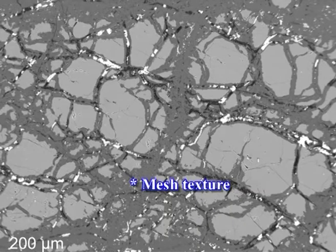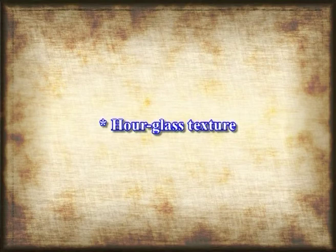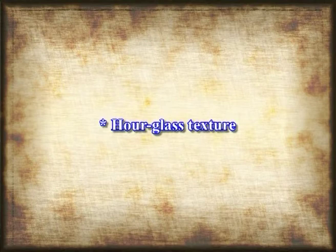Replacement textures, also called superimposed textures: mesh texture develops in serpentinites where needle-shaped serpentine minerals occur in aggregates interwoven like a mesh. Hourglass texture, also in serpentinites, where serpentine minerals replace the granular olivine crystals giving rise to hourglass-like appearances. Bastite texture: a third texture in serpentinites where orthopyroxene crystals are completely replaced by aggregates of serpentine minerals, retaining the prismatic shape of the original orthopyroxenes.